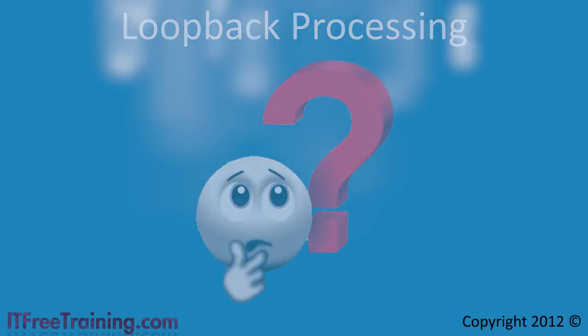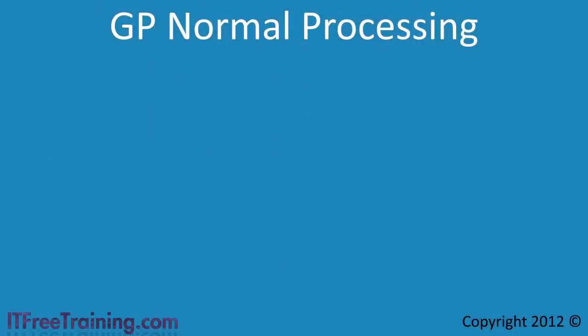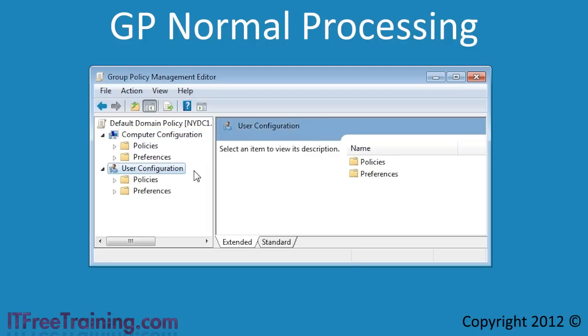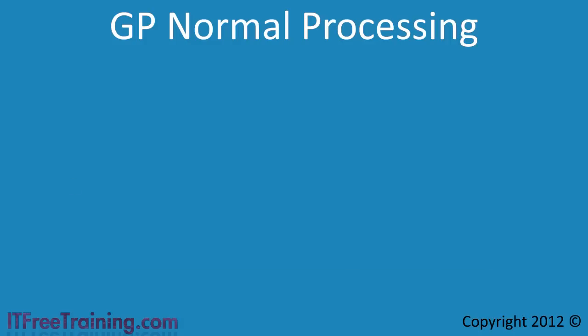Before looking at group policy loopback processing, it is important to understand that group policy is divided into two halves. Opening a group policy object, you can see the two halves: computer configuration at the top and user configuration at the bottom. Loopback processing changes the way these two parts of group policy are applied, so it is important to understand that there are two parts to each group policy object.